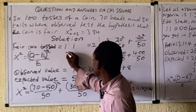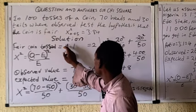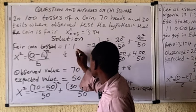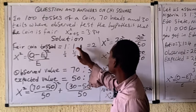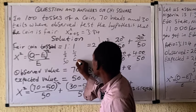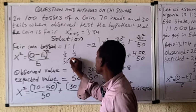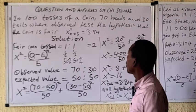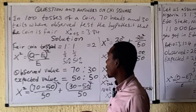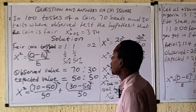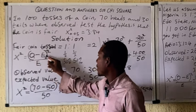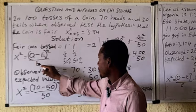The probability of having a head is 1/2, which is the ratio of heads over the total, and the probability of a tail is also 1/2 — that is also 50%. Before we do the calculation, the formula for chi-square is: chi-square equals the sum of (Observed minus Expected), squared, all over Expected.